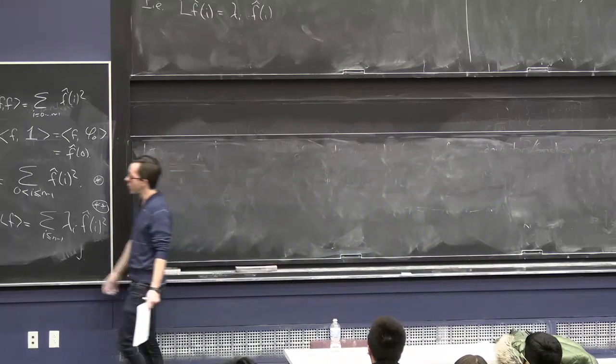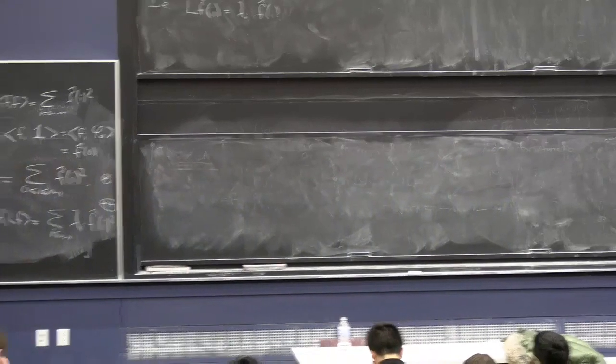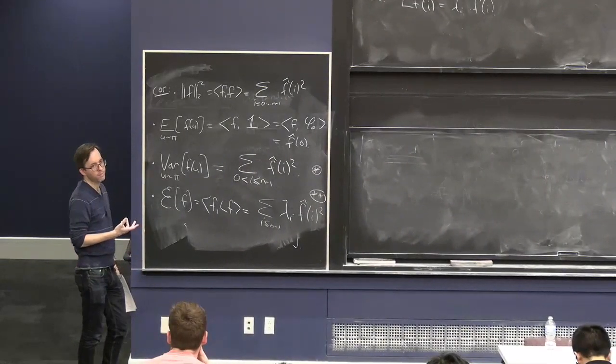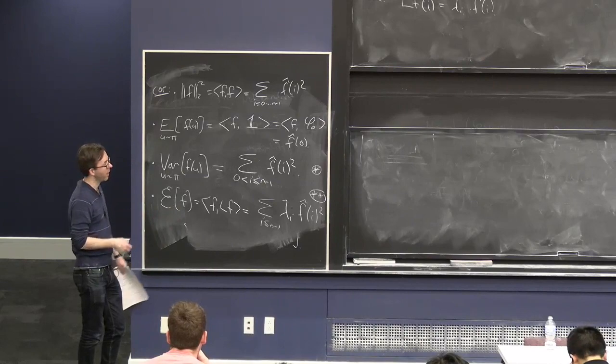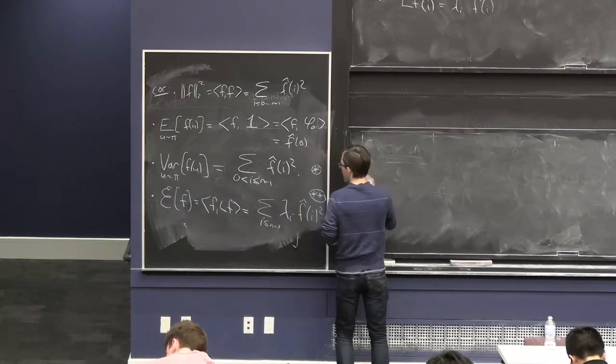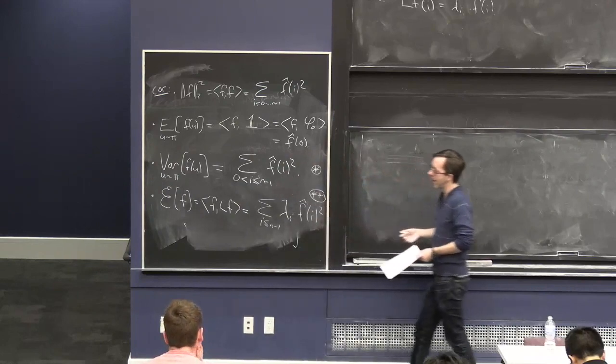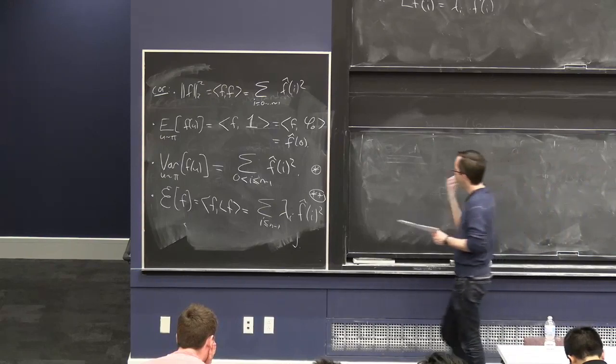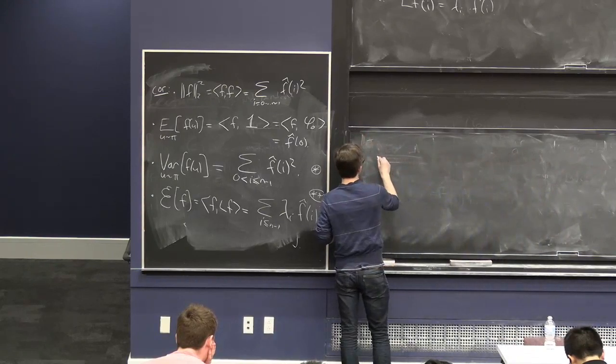And so, we were interested in the minimizer of that over all functions f, which are indicators of subsets. That's a specific kind of function. But we also considered this problem where we didn't insist that the functions f were 0,1 valued. You could just minimize over all f. And let's take a look at that question.